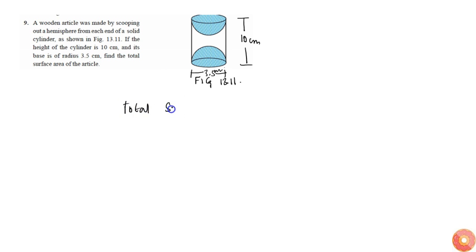Total surface area will be equal to the area of every part which is visible to us of this article. We know that the side of the cylinder is visible, so we need the side area of the cylinder...